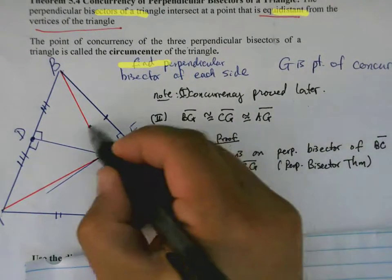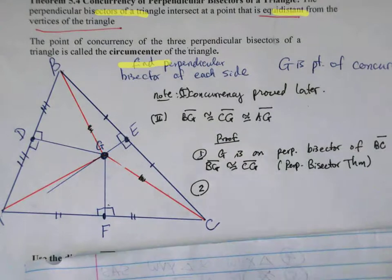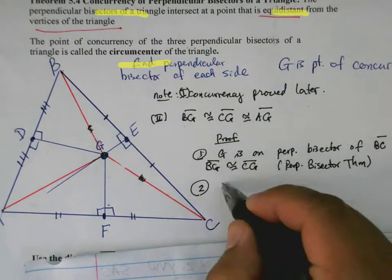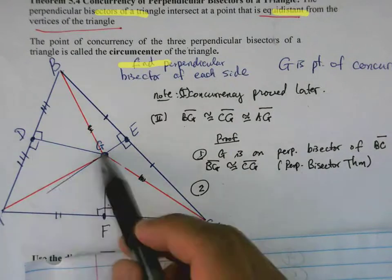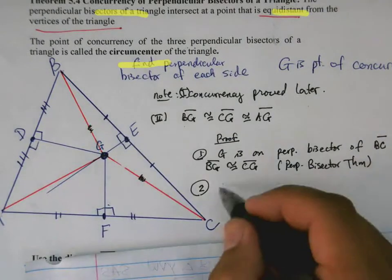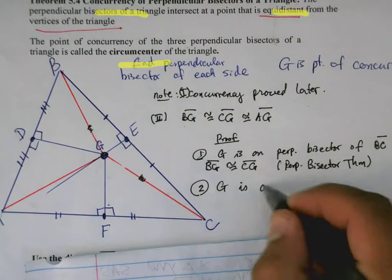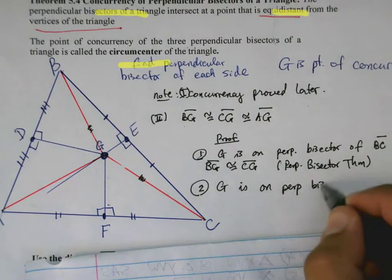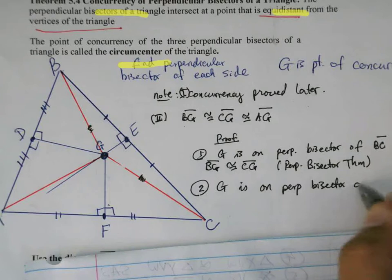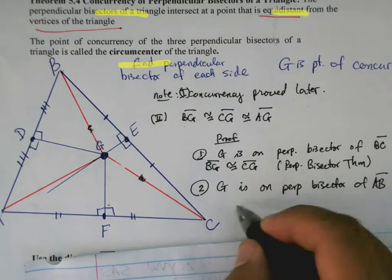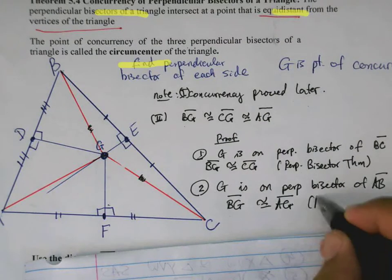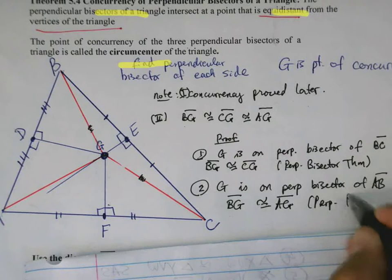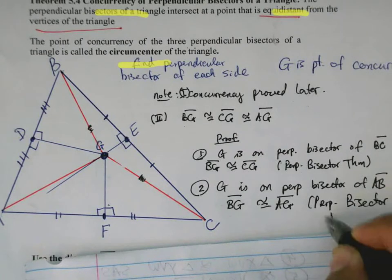Next, we can see that G is also on the perpendicular bisector of AB. So then we can say that BG is congruent to AG. Perpendicular bisector theorem, or theorem 5.2 that we proved before.